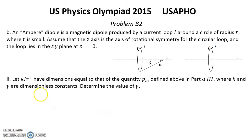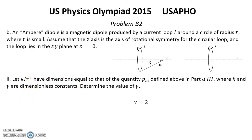Solution for Question 2: From Part A3, PM has dimensions of ampere·meter². This means that γ = 2. That is the answer for Question 2.